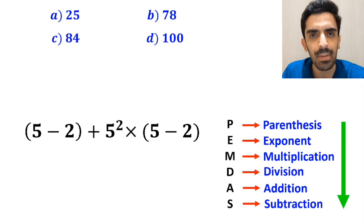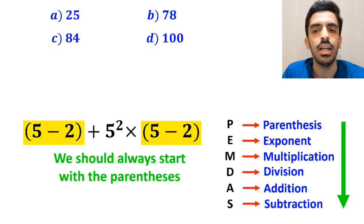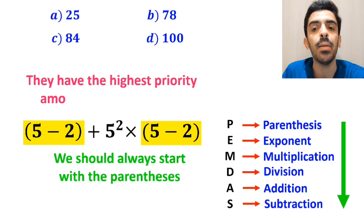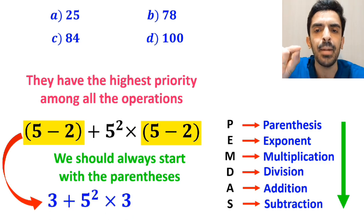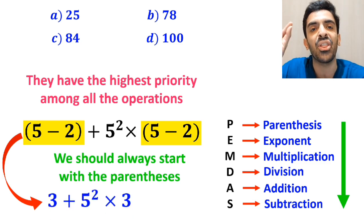According to the PEMDAS rule, we should always start with the parentheses, since they have the highest priority among all the operations. So, instead of the original expression, we can rewrite it as 3 + 5² × 3.